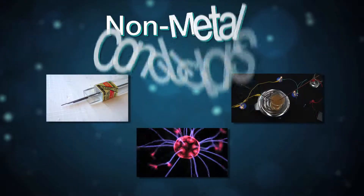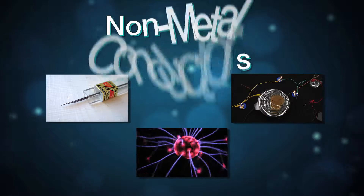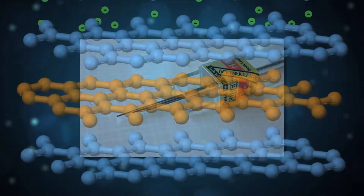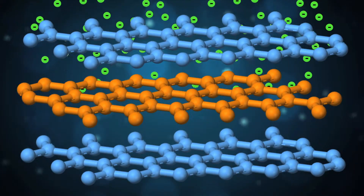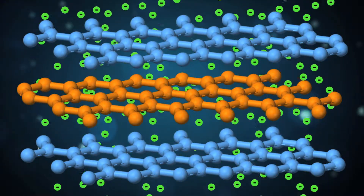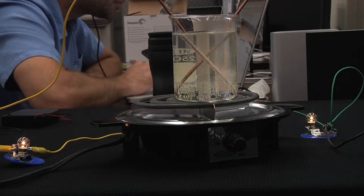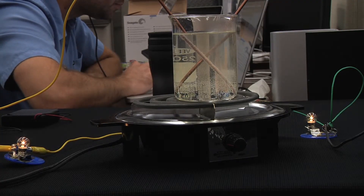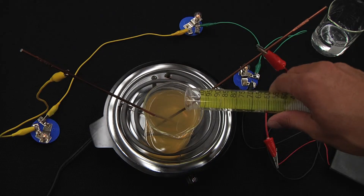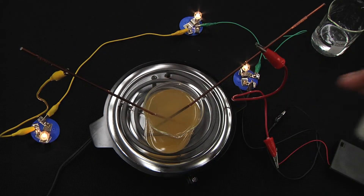There are also non-metallic conductors of electricity. Graphite, which is comprised of carbon layers with free electrons, is a good conductor. The presence of dissolved table salts in water increases the conductivity of water due to the charges of the chlorine and sodium ions.